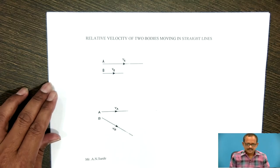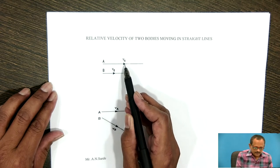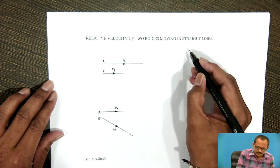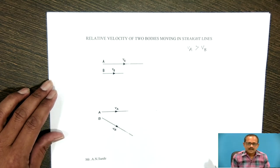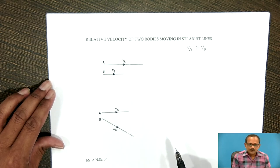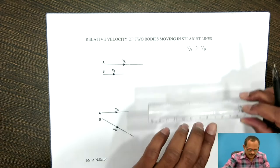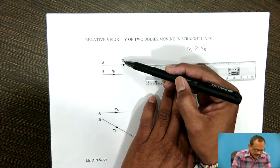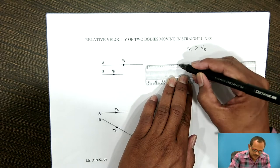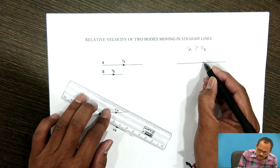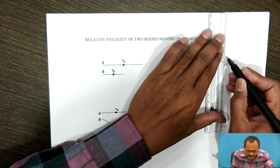Consider body A and body B — both are moving in a straight line with velocity VA and VB, where the velocity of point A is greater than the velocity of B. The relative velocity of A with respect to B, or B with respect to A, can be determined by drawing the vector diagram. As we know, the velocity of point A is VA as shown in the figure, so from fixed point O, draw a vector OA. This vector OA represents the velocity of point A in magnitude as well as in direction.